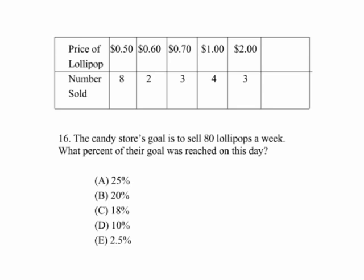If we want to sell 80 lollipops a week, what percent was reached on this day? To find how many lollipops I've sold so far, I add up 8 plus 2 plus 3 plus 4 plus 3, which gives me 20. Well, 20 divided by 80 is one fourth — it's 25%.